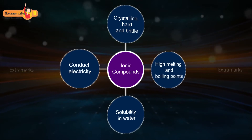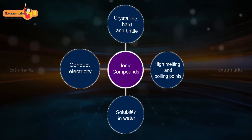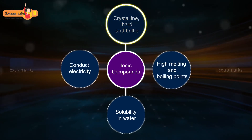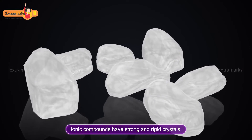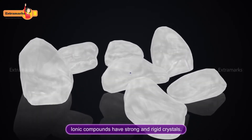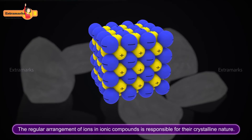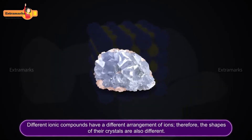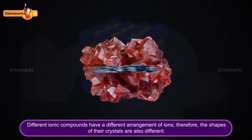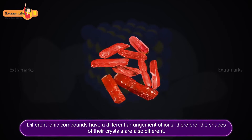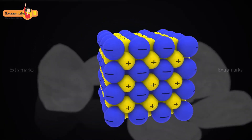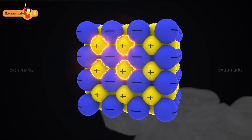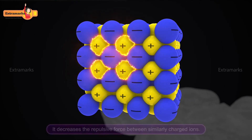Ionic compounds are different from covalent compounds; they are characterized by a number of features. Ionic compounds have strong and rigid crystals. The regular arrangement of ions in ionic compounds is responsible for their crystalline nature. Different ionic compounds have different arrangements of ions, therefore the shapes of their crystals are also different. In an ionic crystal, negative ions are arranged around a positive ion and positive ions are arranged around a negative ion.